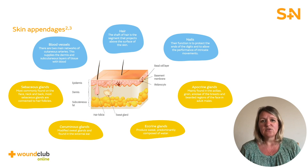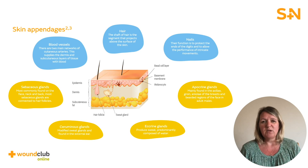The skin contains three to four million sweat glands. These glands release sweat into hair follicles or onto the skin surface through pores. There are two types of sweat glands: eccrine glands and apocrine glands, based on their structure, location and type of secretion. Eccrine glands are the most abundant on the soles of the feet and produce sweat. They are predominantly composed of water but also include sodium and chlorine ions, ammonia, amino acids, glucose, lactic acid, urea and uric acid.